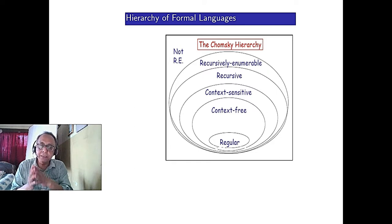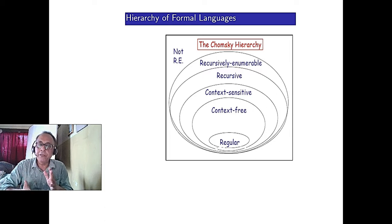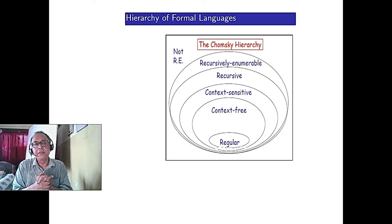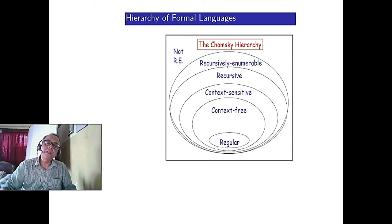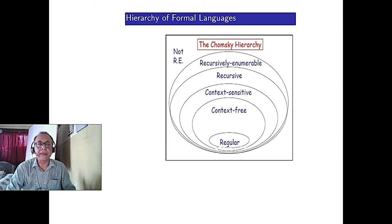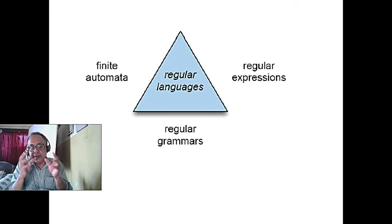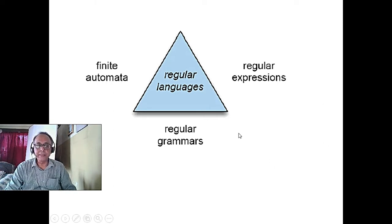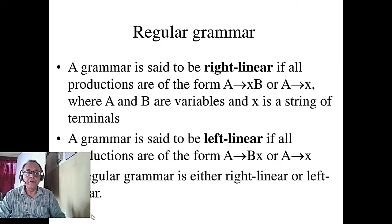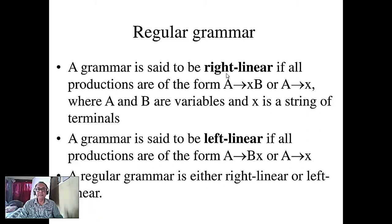Regular language and finite state machines model all our day-to-day mechanical devices. But for programming, when you call a function repeatedly, you need a more powerful grammar — deterministic context-free grammar, or non-deterministic context-free grammar. Both require a deterministic PDA, which is a finite state machine combined with a stack.